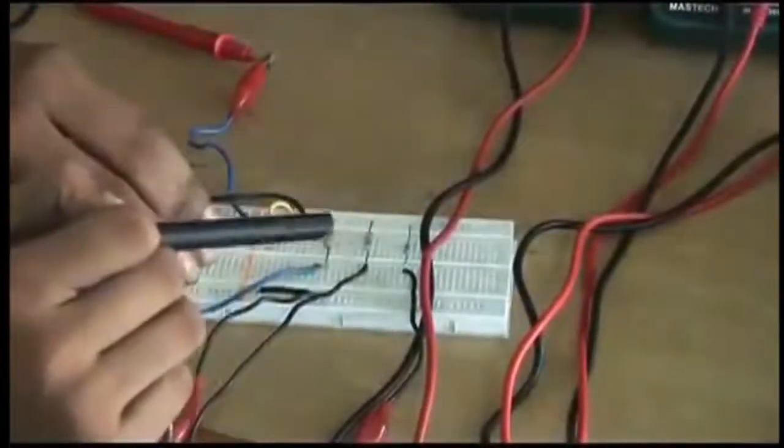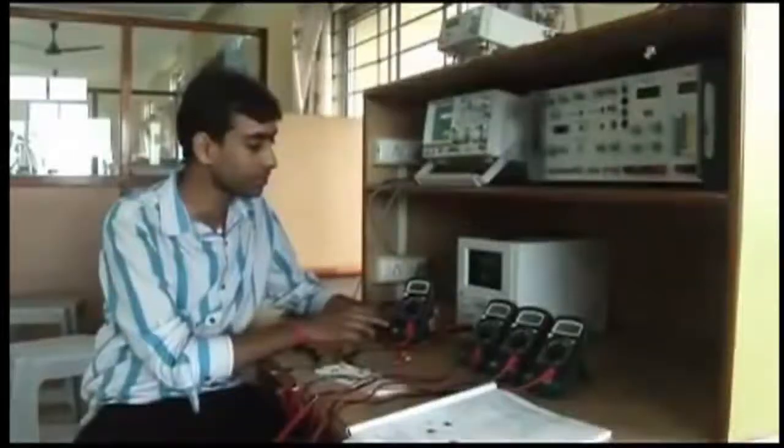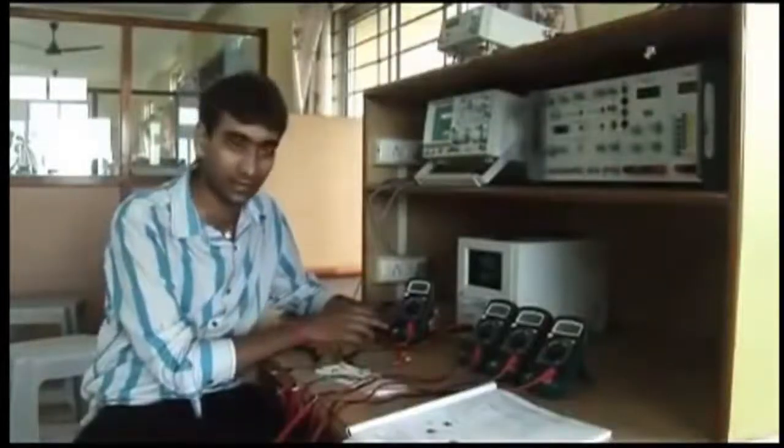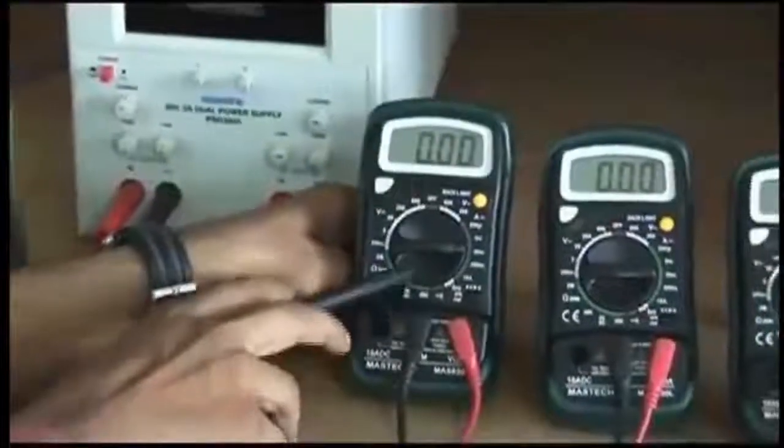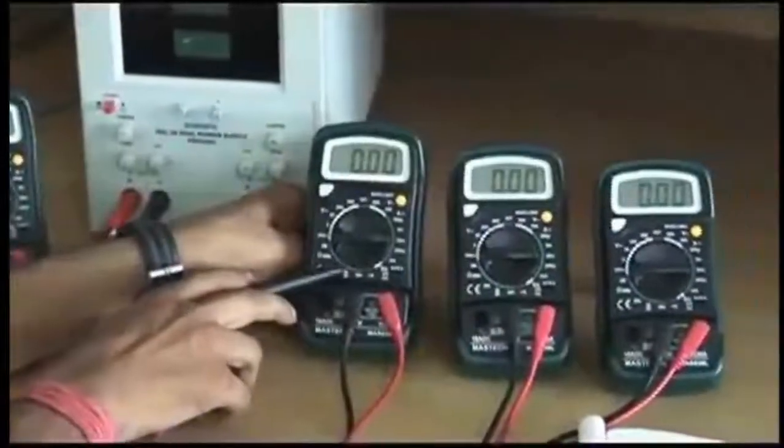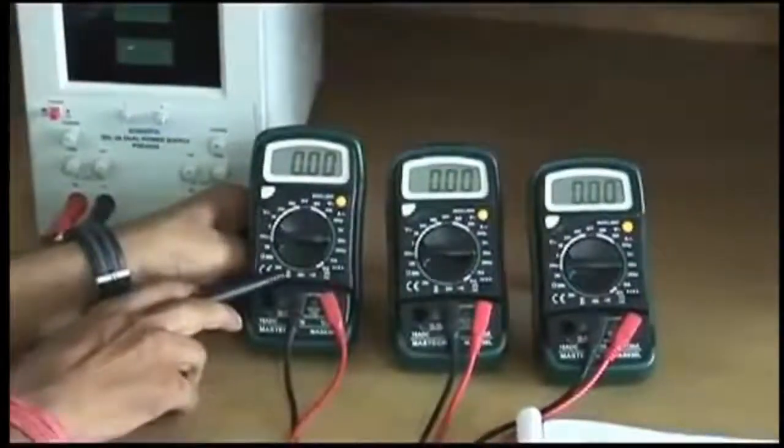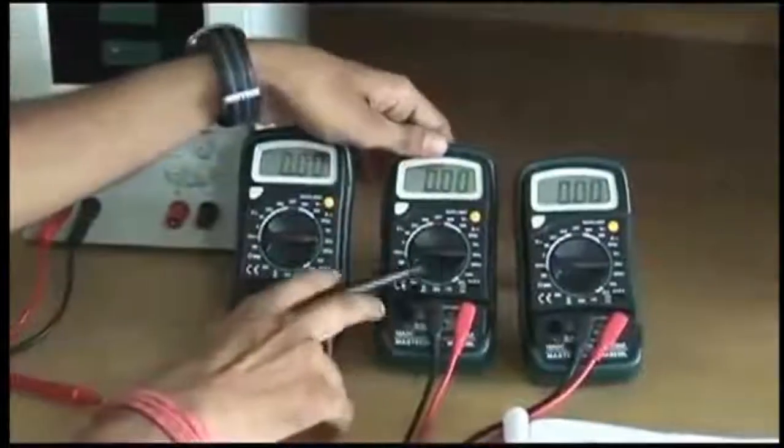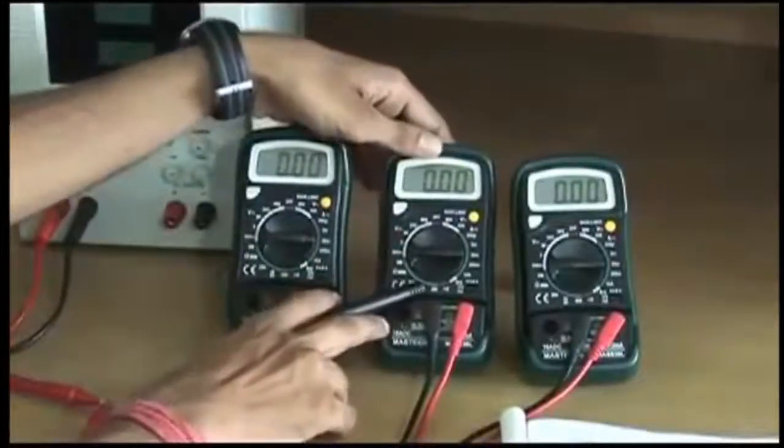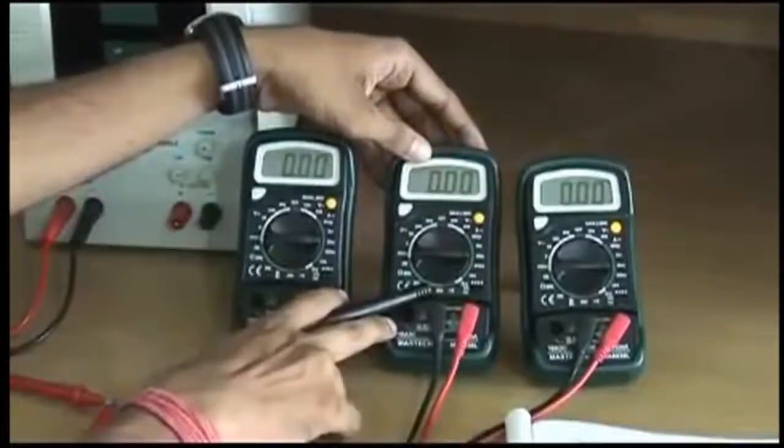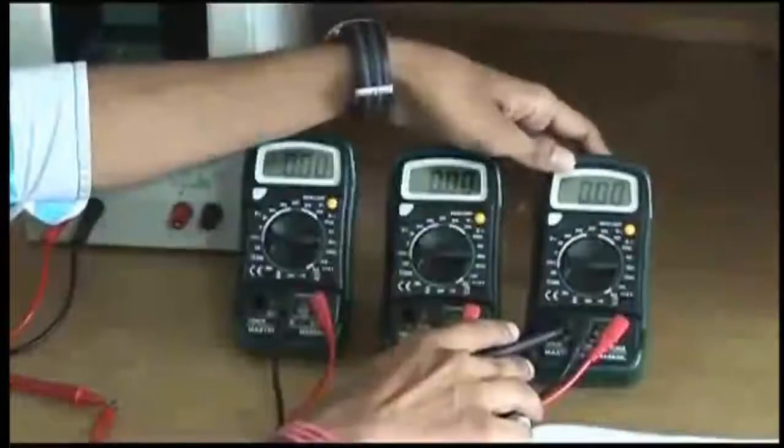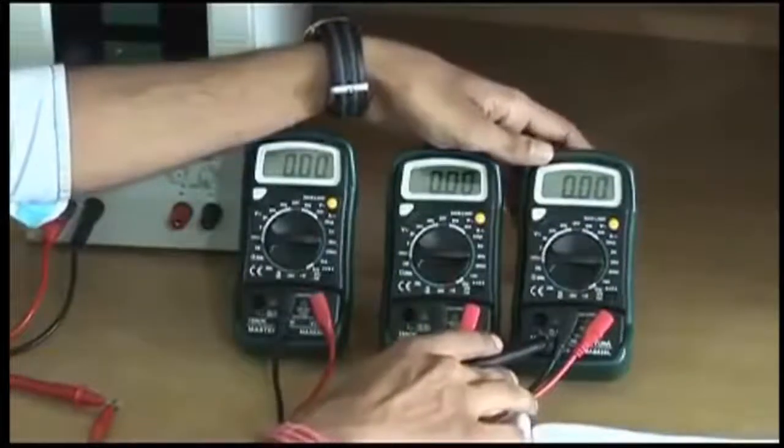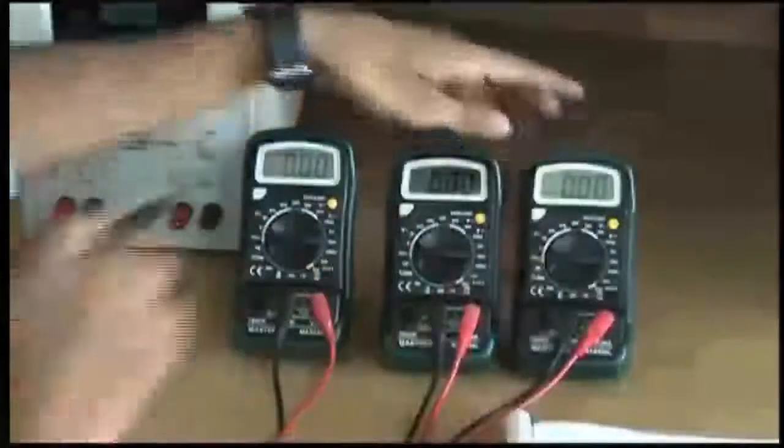Now there will be four different multimeters. See this is one multimeter, this will calculate the total current in the circuit. This is the second multimeter that is going to calculate the current through the second branch or you can say through the resistance of 3.3 kOhm. This is the third multimeter which is used as an ammeter, it is going to calculate the current through the third branch through 2.2 kOhm resistance. This is the fourth multimeter which is going to be calculating the current through the last resistance that is 5.6 kOhm.